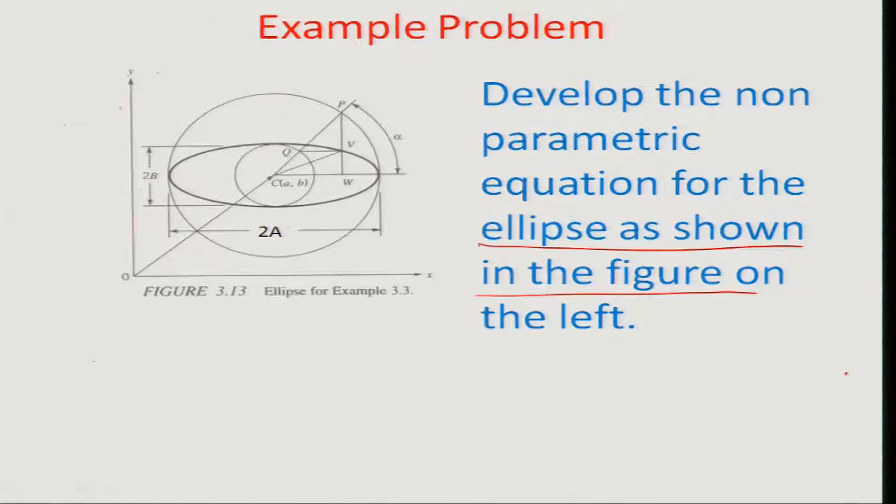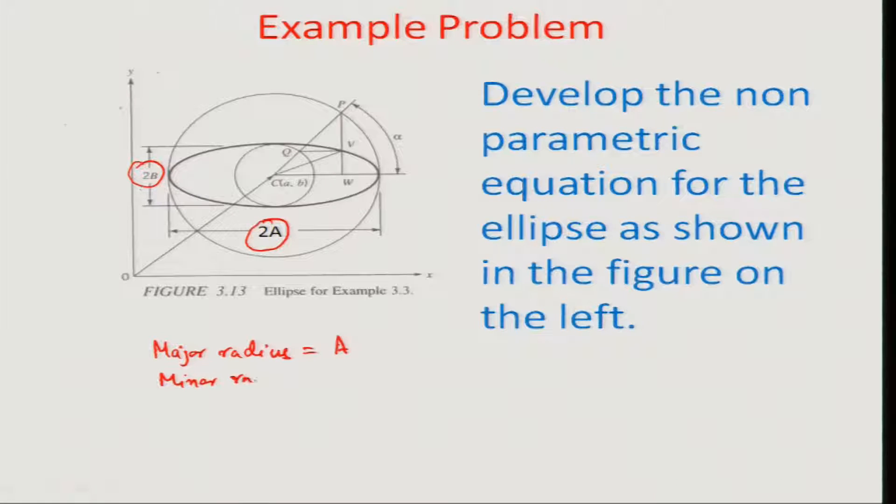One of them is this ellipse. You can see that there is an ellipse in this particular equation where we want to develop the non-parametric form of the equation and also the parametric form. If we look very closely at the ellipse, there are various parameters which are mentioned here. One is this major radius a of the particular ellipse and the minor radius b. So, the major radius in this particular case is capital A and the minor radius is capital B.